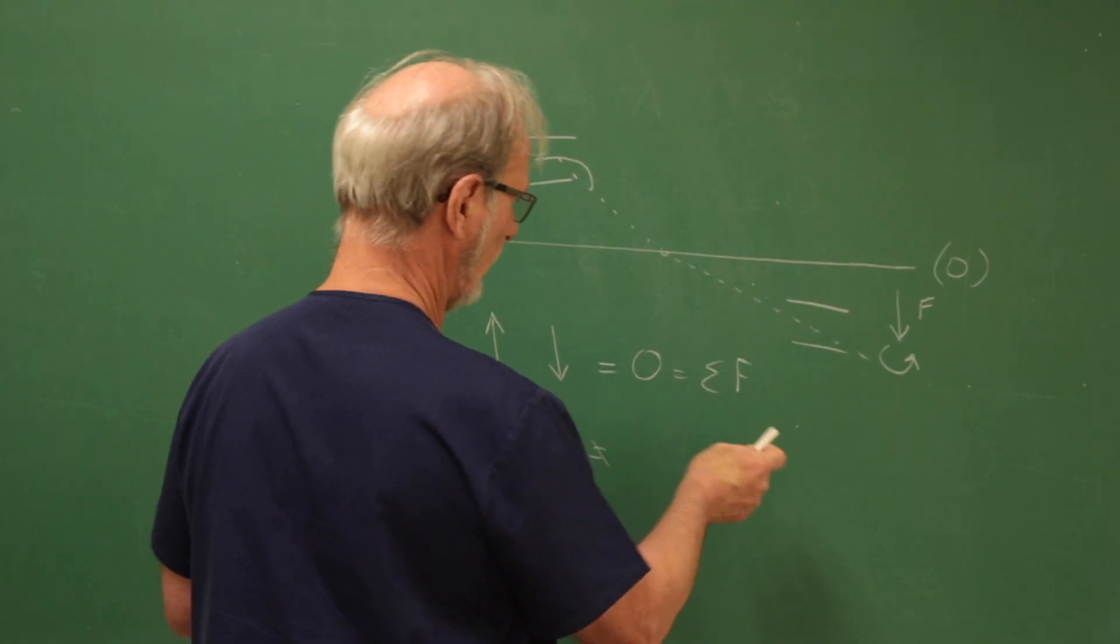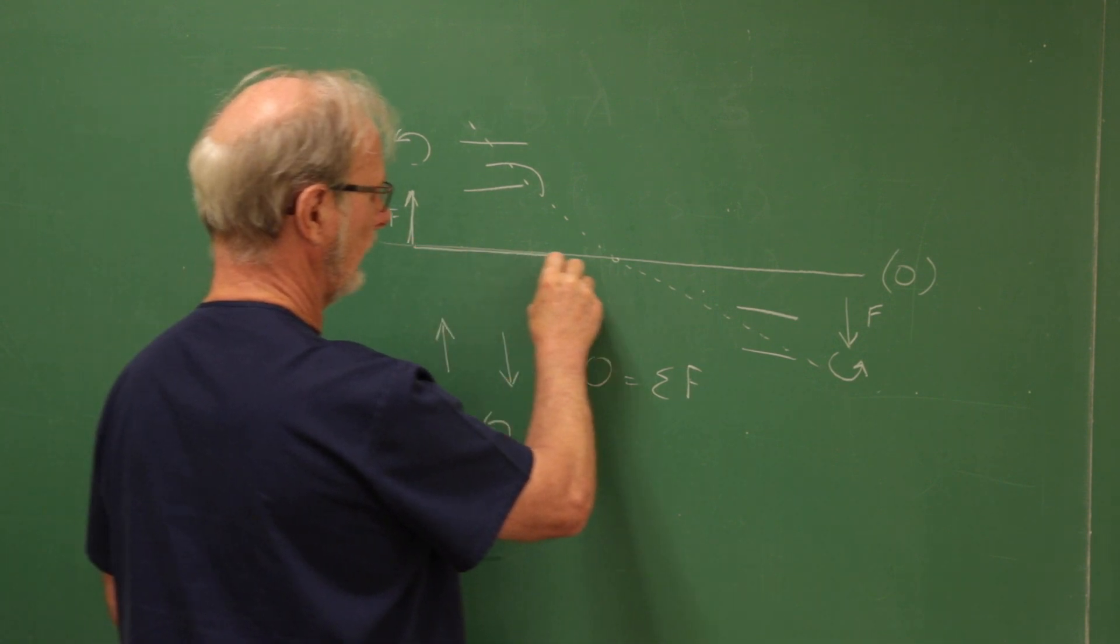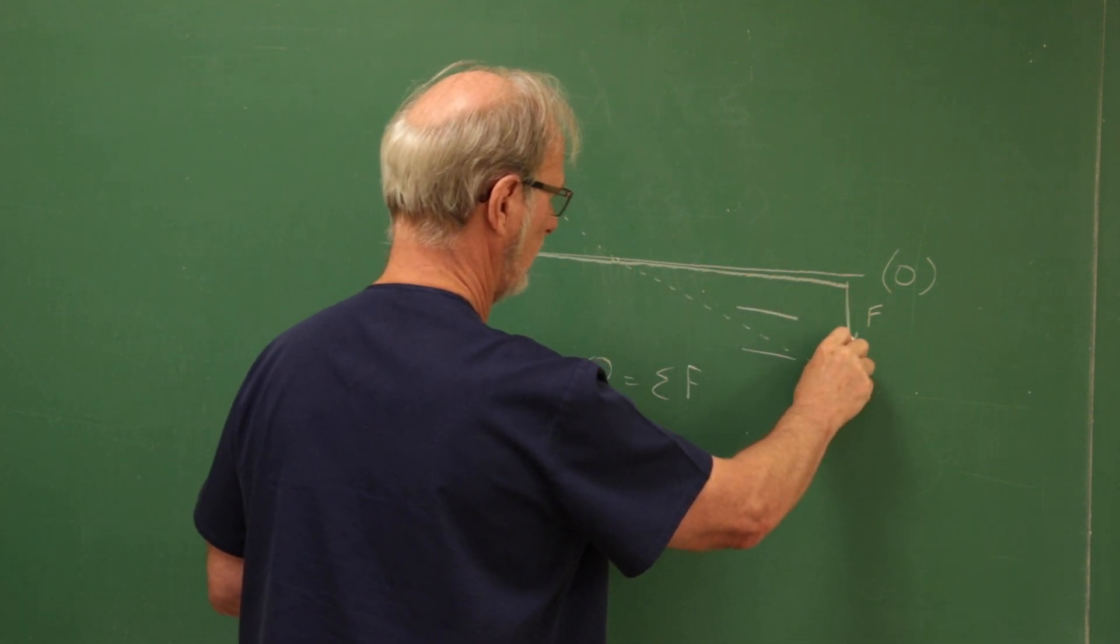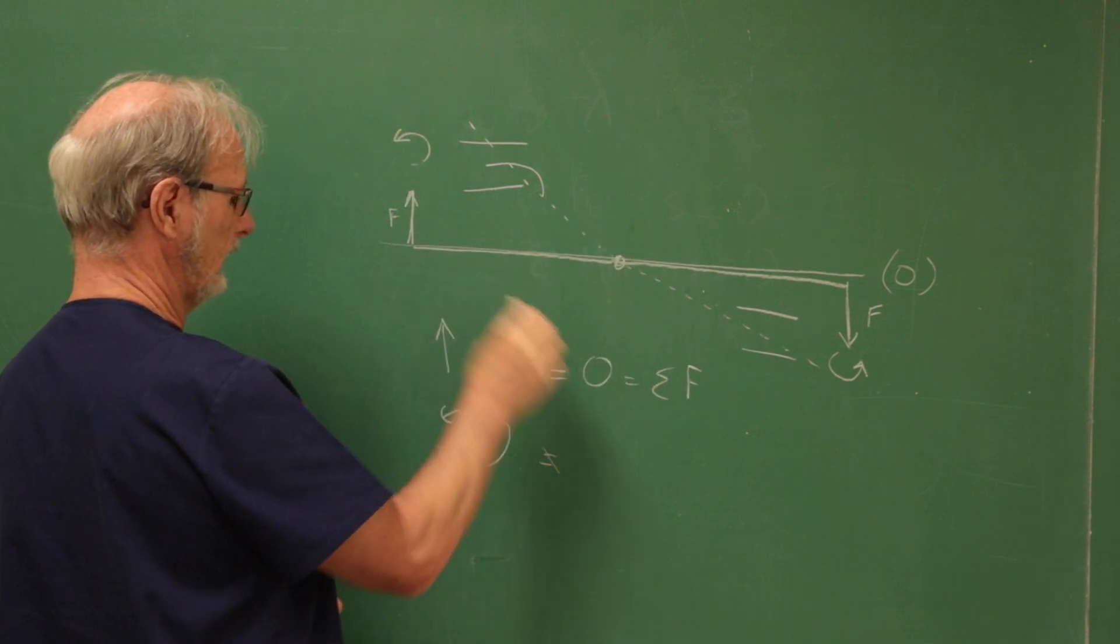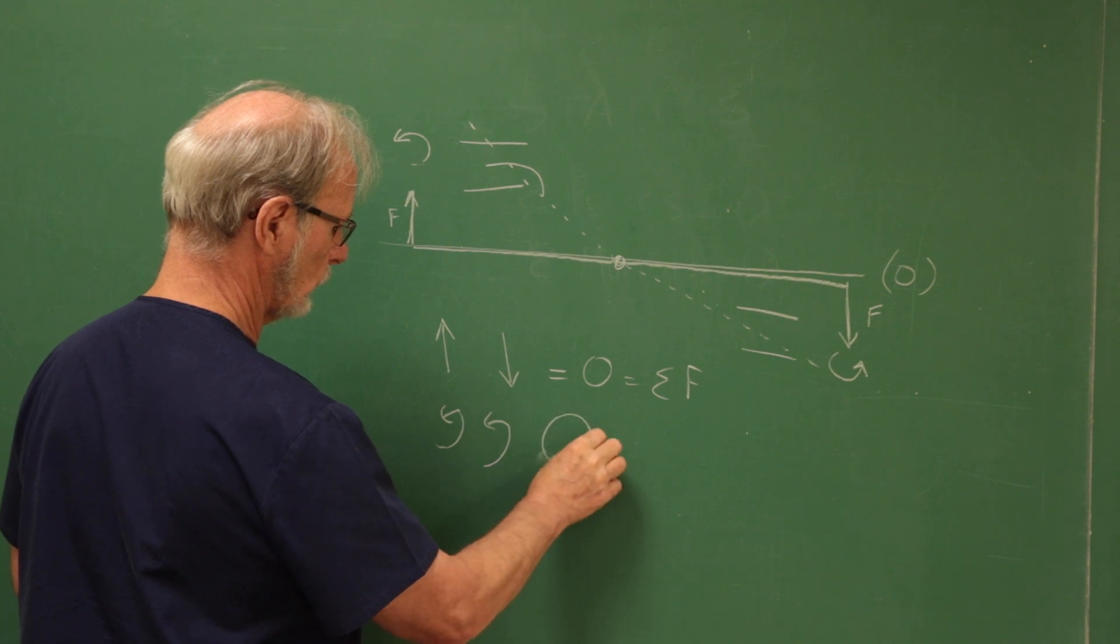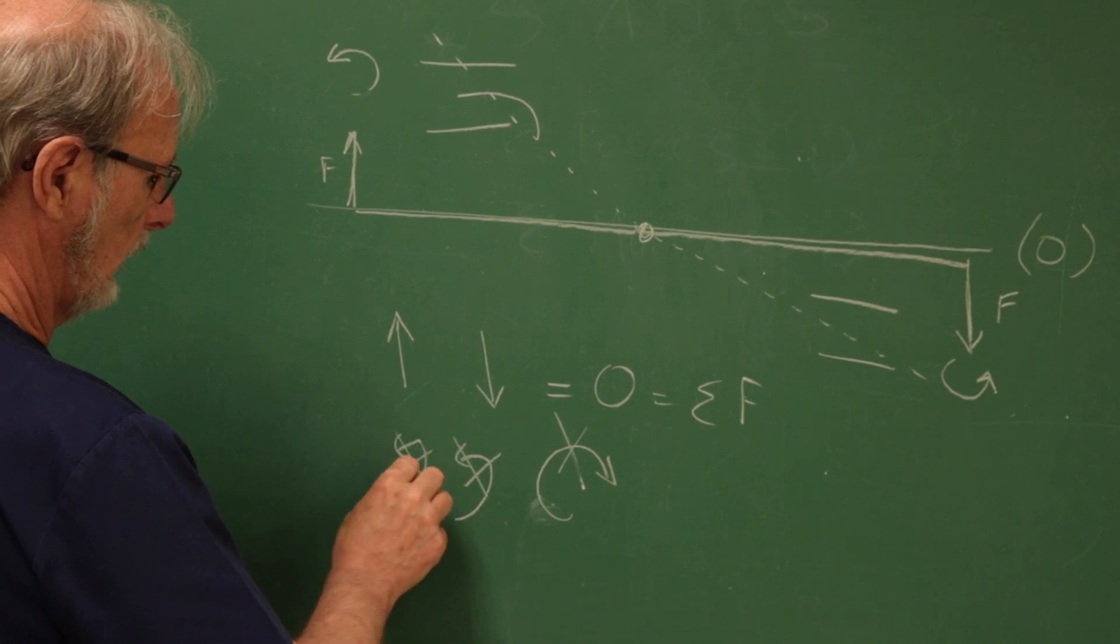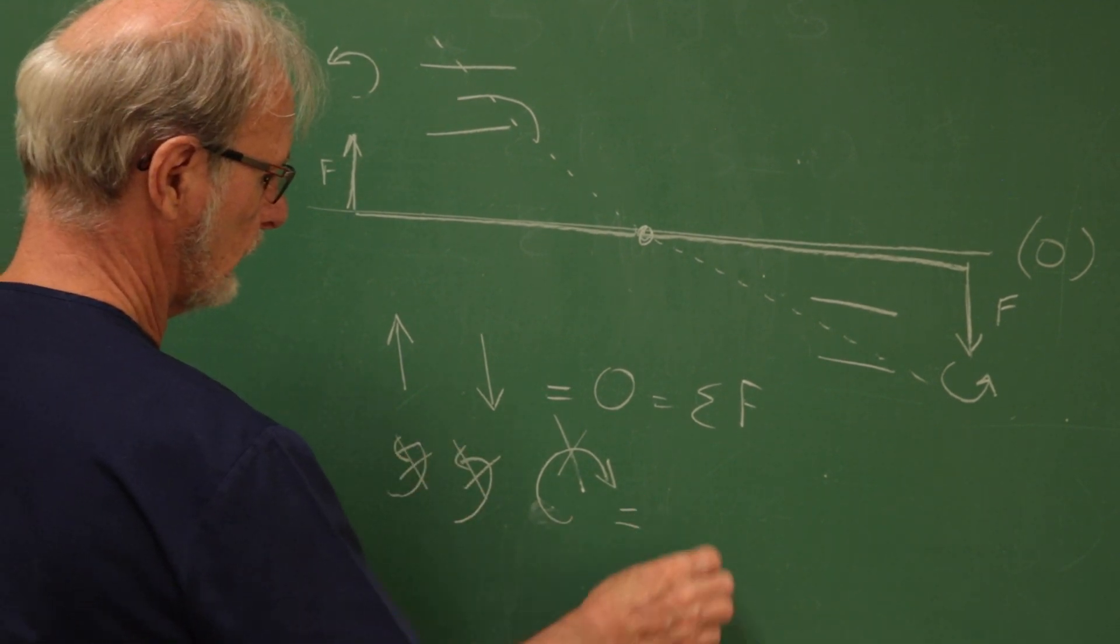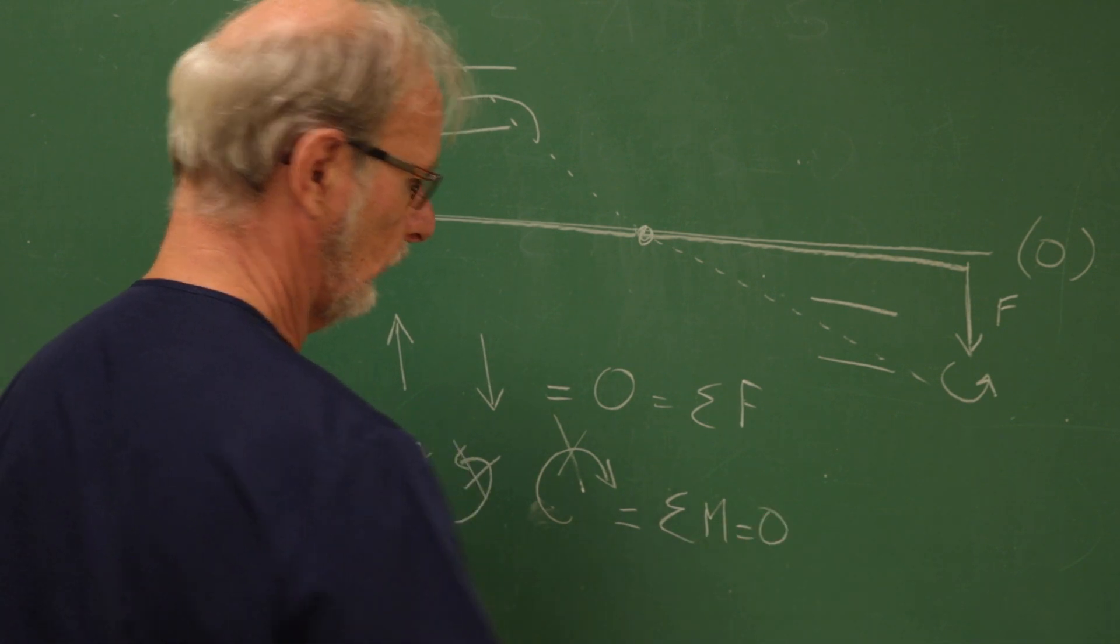Because if you look carefully at the system, this force here times this distance right there also creates a couple, which actually is in this direction. So now you have a larger moment in this direction, and these two moments are equal and opposite. The sum of moments equals zero again.